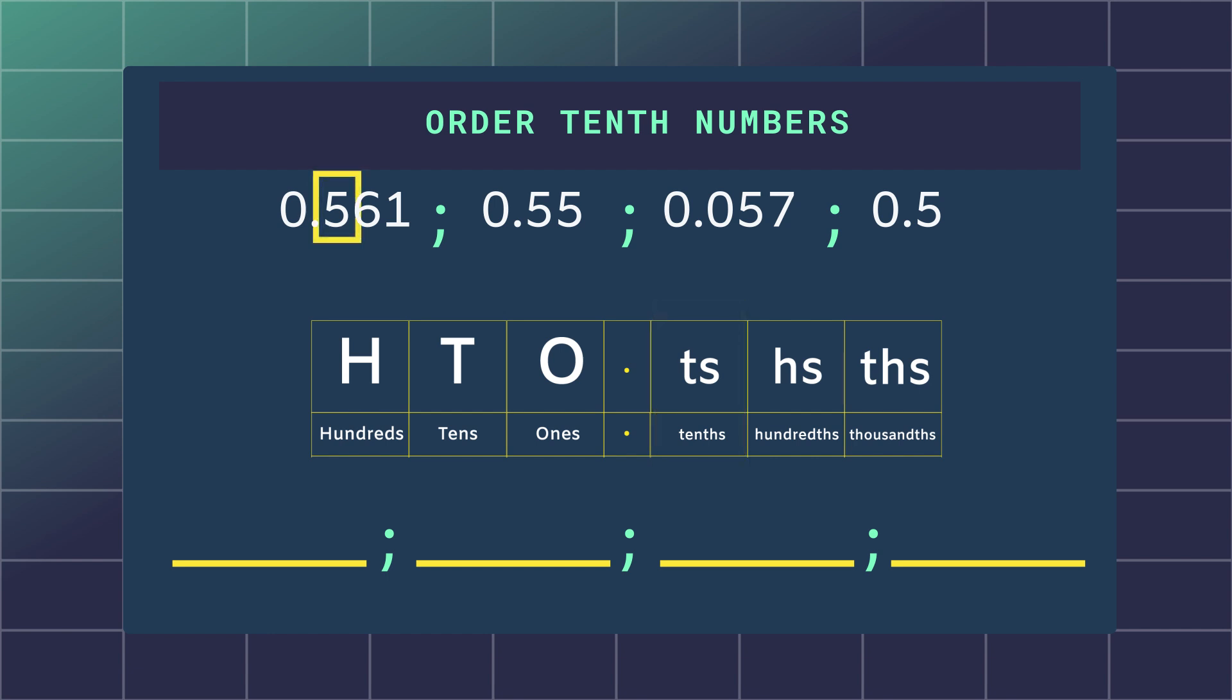This number has 5 tenths and this number has 5 tenths as well, but this number has 0 tenths and the last number has 5 tenths as well. So what we know from comparing these tenths is that the number 0.057 is the smallest number. So let's put it first.